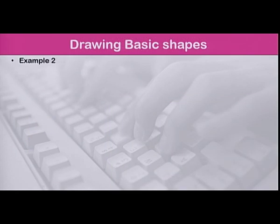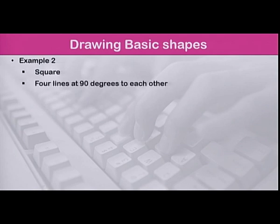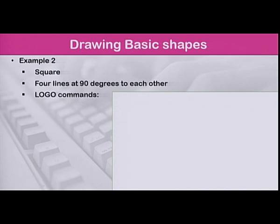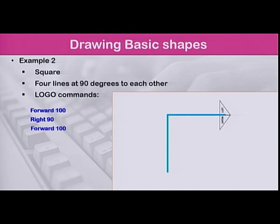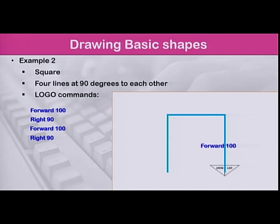Let us see another example — drawing a shape with more than two lines. To draw a square of length 100 units, we need the following Logo commands. Forward 100 will draw the first line. Turn right 90 degrees and move forward to draw the second line. Turn right 90 again. Forward 100. And finally, turn right 90 degrees to draw the last line.